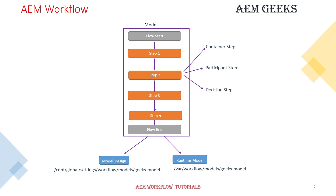Third is the Decision step — when you have to perform tasks based on a condition, like an if-else condition, mainly when you need branching in your workflow, you use the decision step. Fourth is the Process step. If you've ever been to a workflow interview, everyone asks about the custom workflow process. Custom workflow processes are executed using the process step. If you write your own custom process, you will invoke it using this process step.